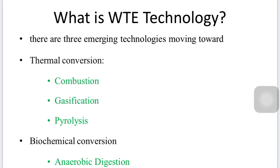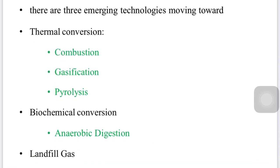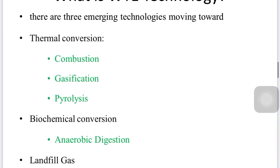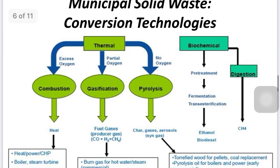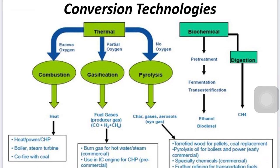WTE technology is divided into three major parts: first, thermal conversion; second, biochemical conversion; and third, landfill gas. Thermal conversion is further divided into three types: combustion, gasification, and pyrolysis. In the case of biochemical conversion, that is anaerobic digestion. There are multiple technologies for converting MSW to energy, but these technologies are not in competition with each other — they work in parallel.